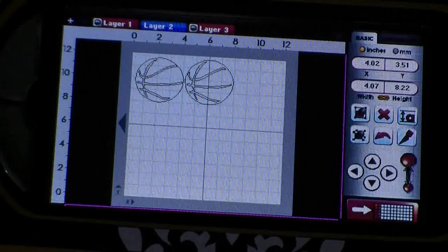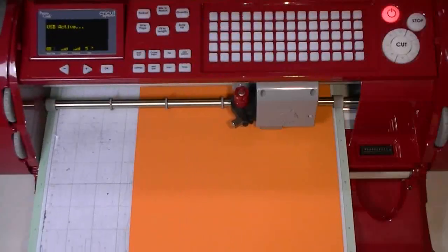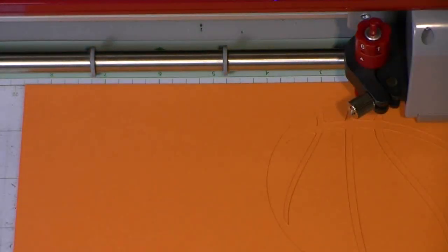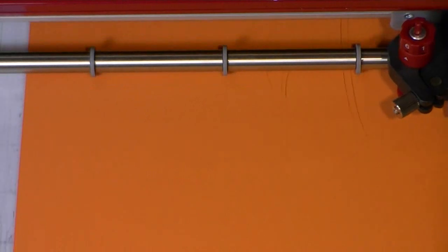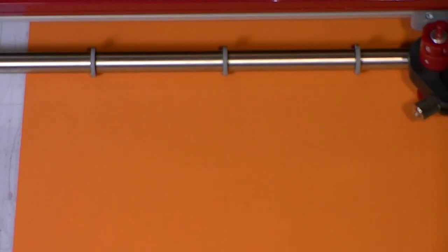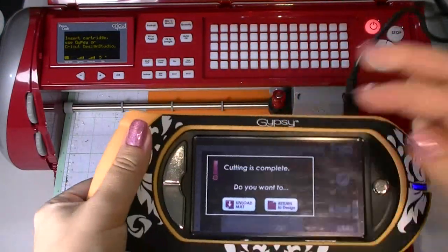I have to load the paper again. I'm cutting out the two basketballs now. Let me zoom in and try to show you. I'm not a neat cut, look at that. I think it looks really cool. This is going to be a pretty simple card. Hopefully it fits as well as I think it does. So now let me unload.